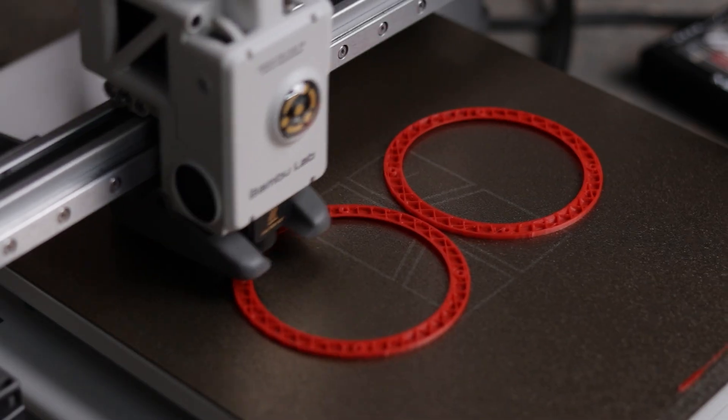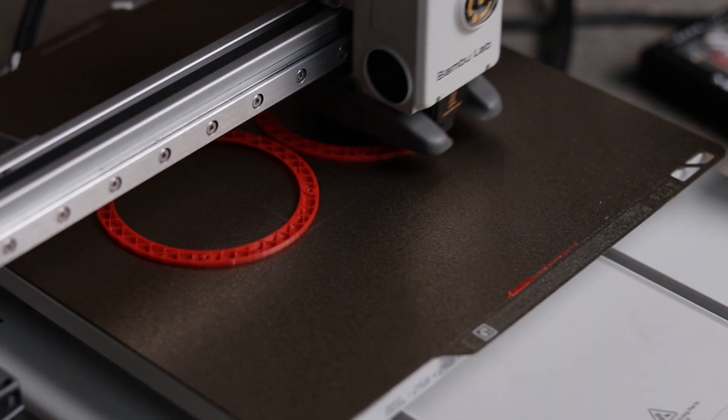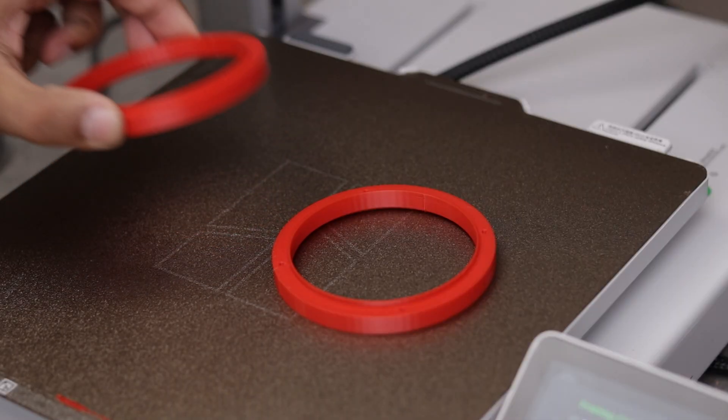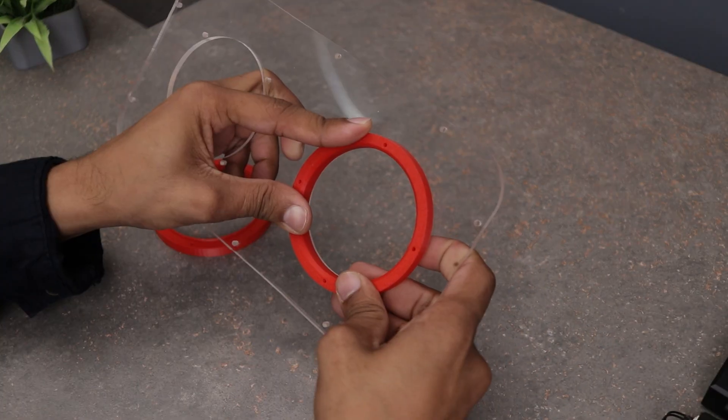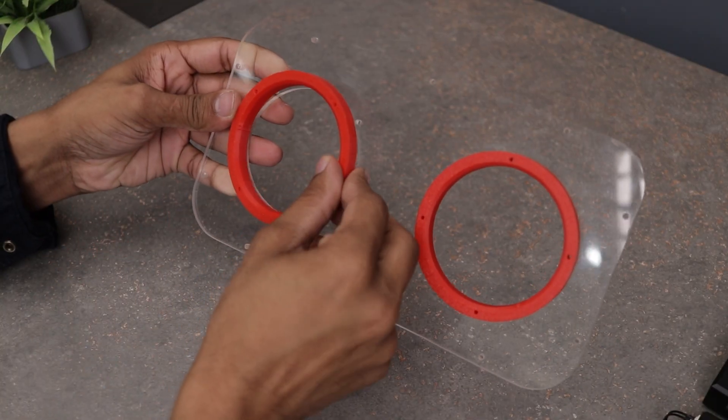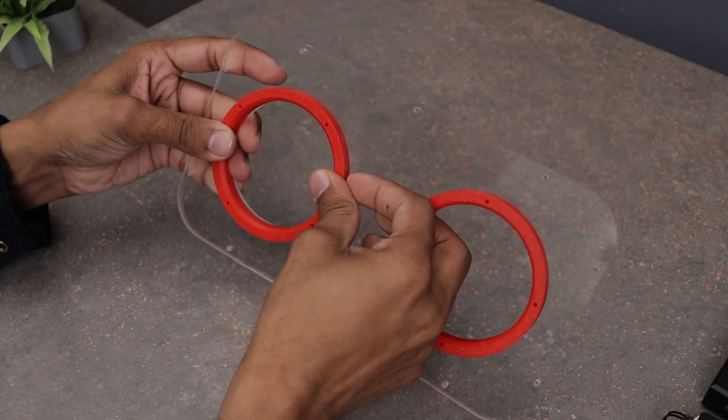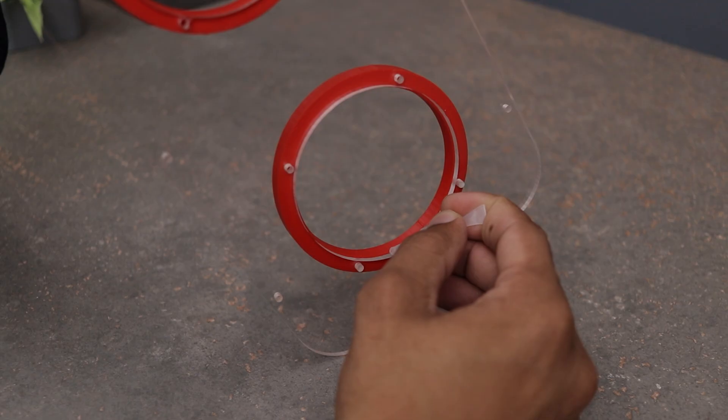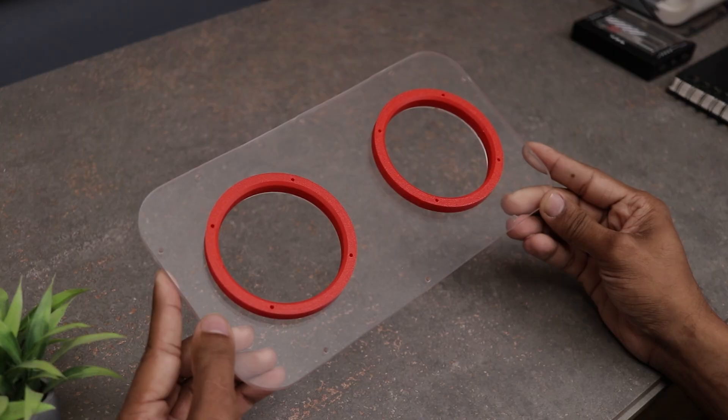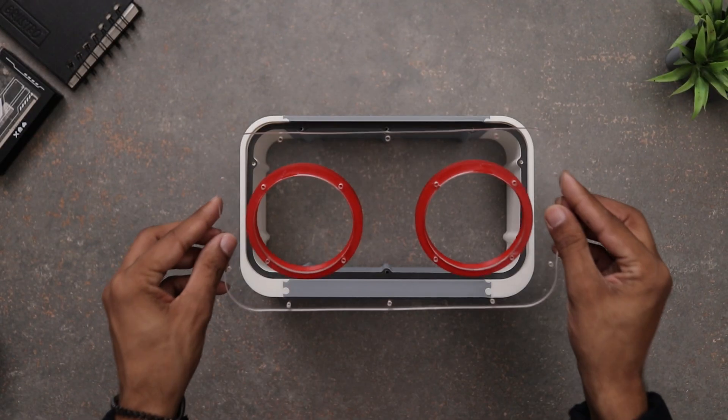Now it's time to install drivers onto the front acrylic panels. But, we can't screw them directly as we need a proper structure to secure the screws. To solve this, I 3D printed these custom mounting rings which will be fixed onto the front panel. Installation is super simple, just snap them into place and apply some superglue to ensure they stay secure. Now, let's attach the front panel and install the drivers.